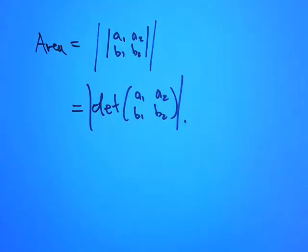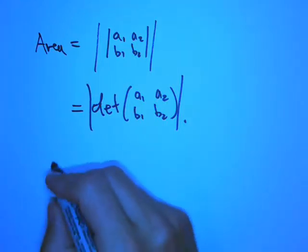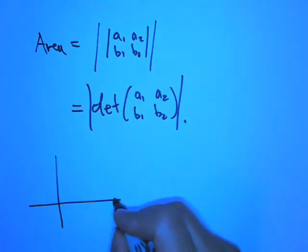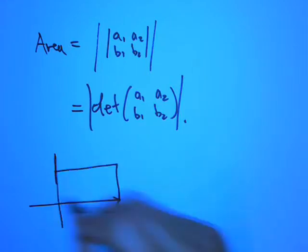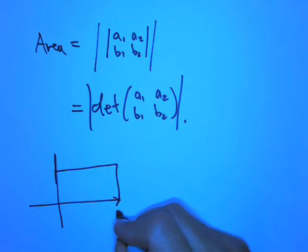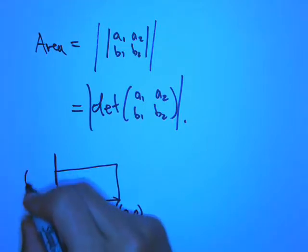Certainly, beyond a square, a rectangle is a pretty good example. And that would be, let's say, A comma 0, 0 comma B oriented so that going from the A vector to the B vector is counterclockwise.